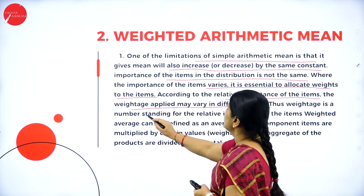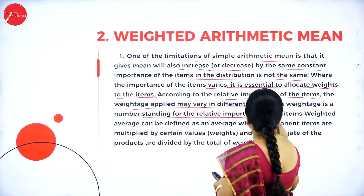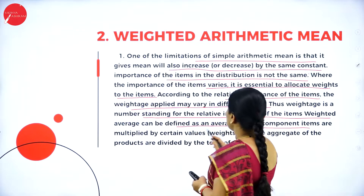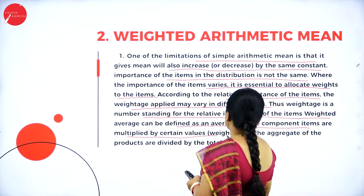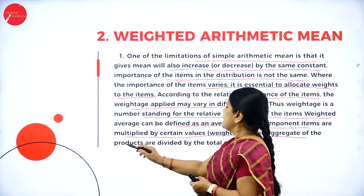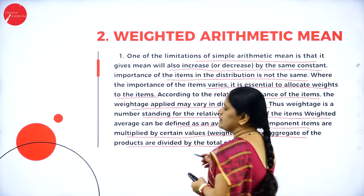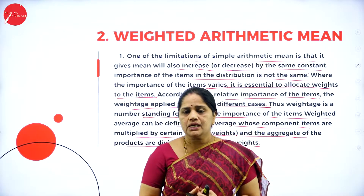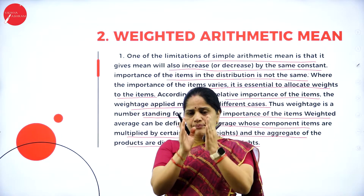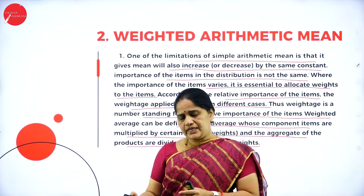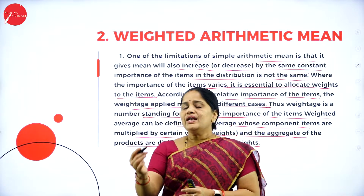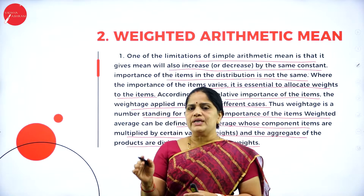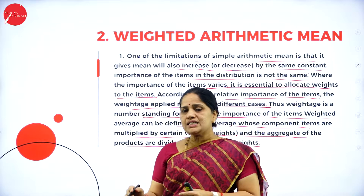Weightage is a number standing for the relative importance of the items. Weighted average can be defined as an average whose components are multiplied by certain values and the aggregate of products are divided by the total of the weights. Based on the importance of the values, we assign weights and calculate the mean by multiplying the values with the weights to get the weighted mean.